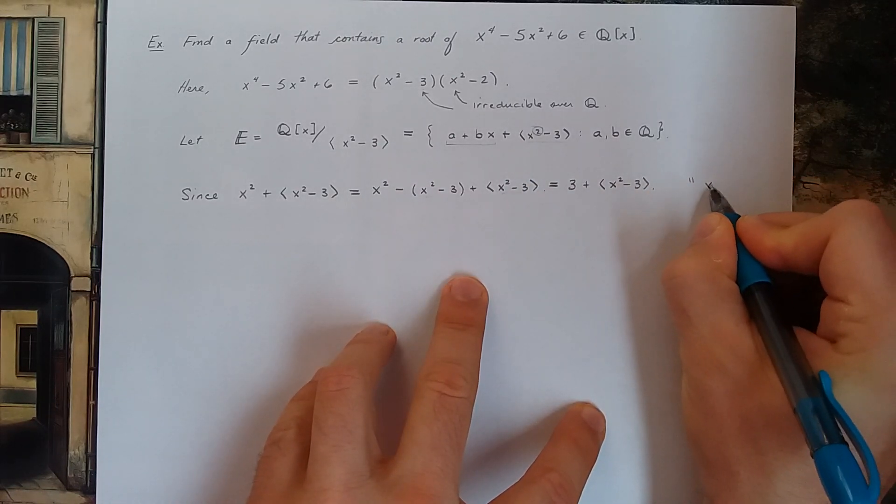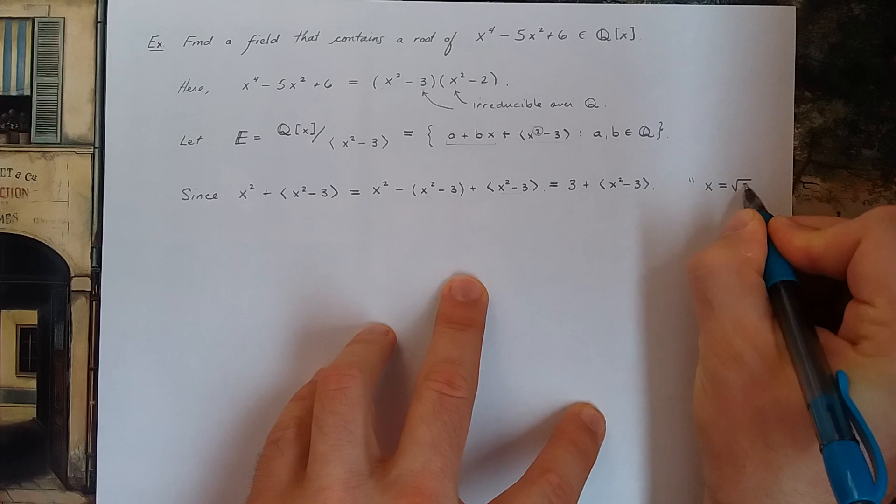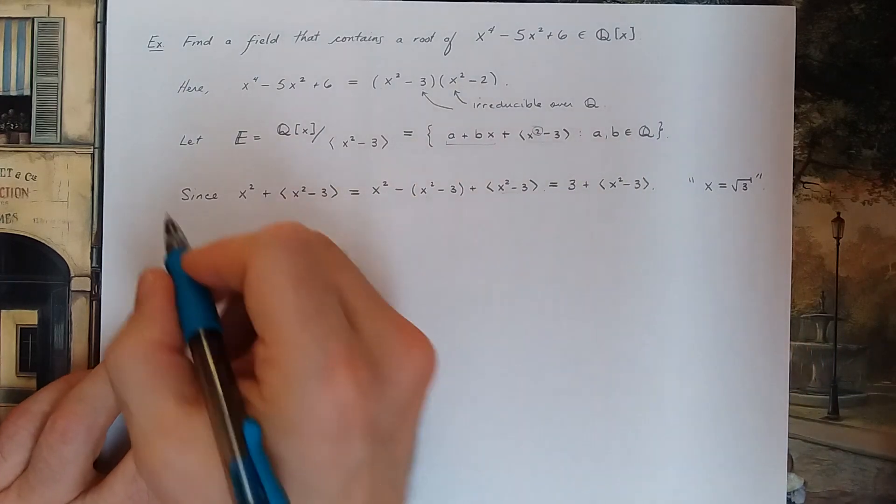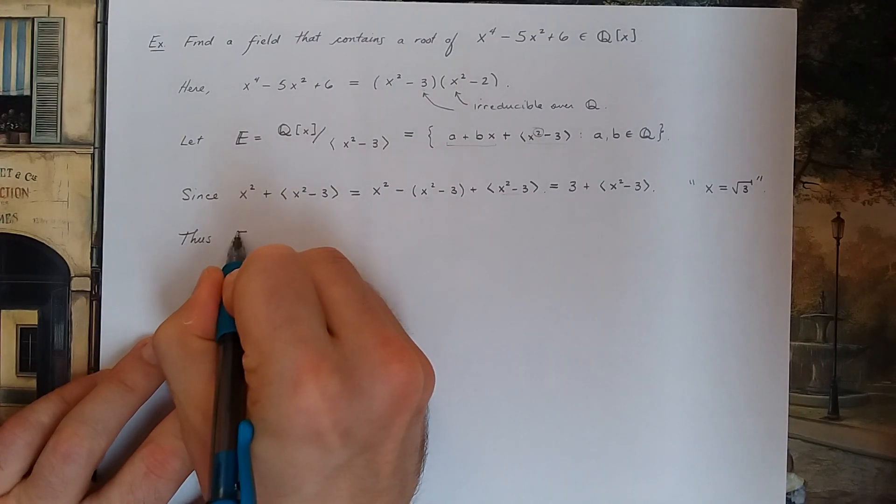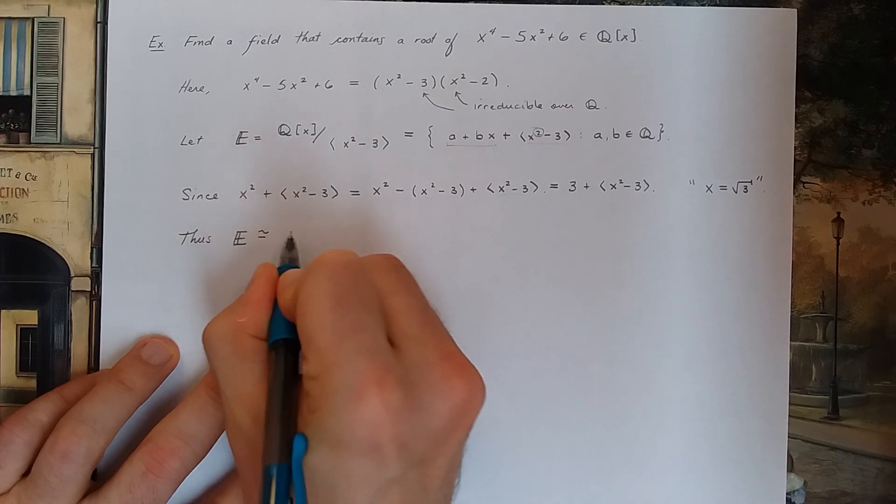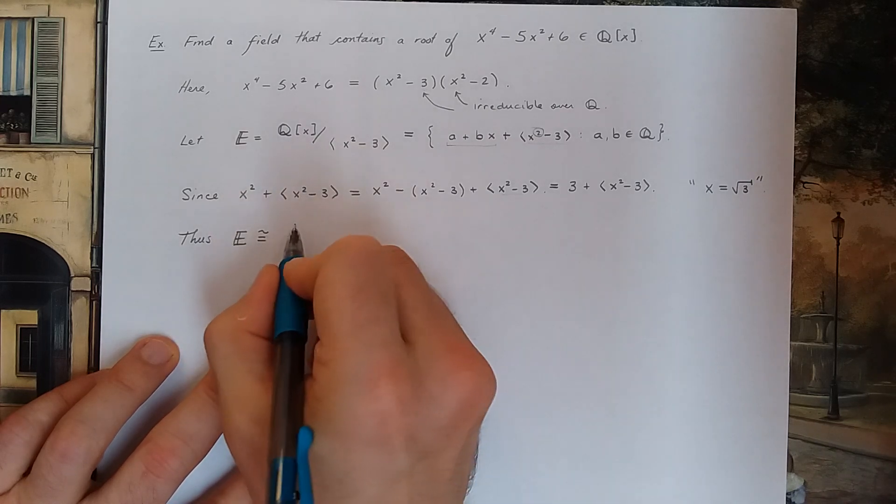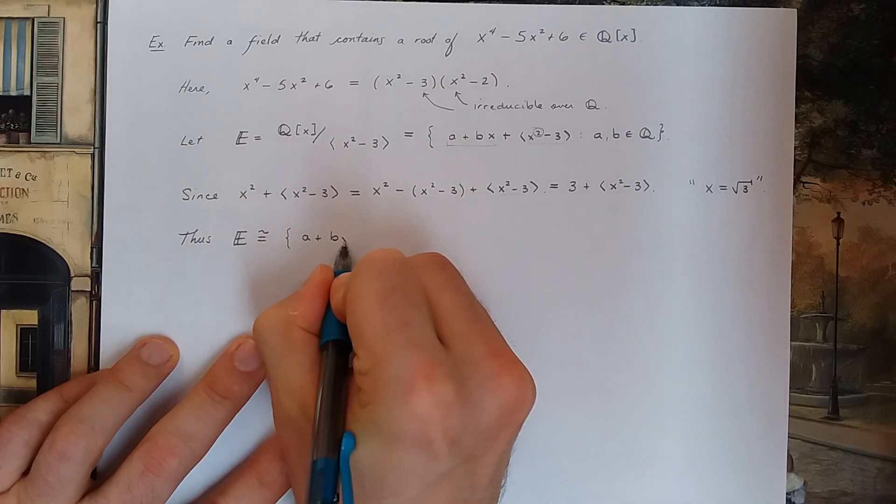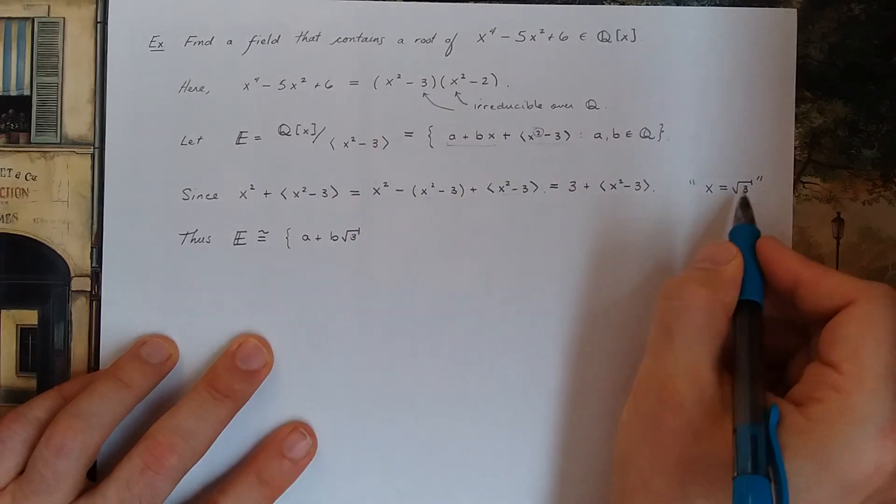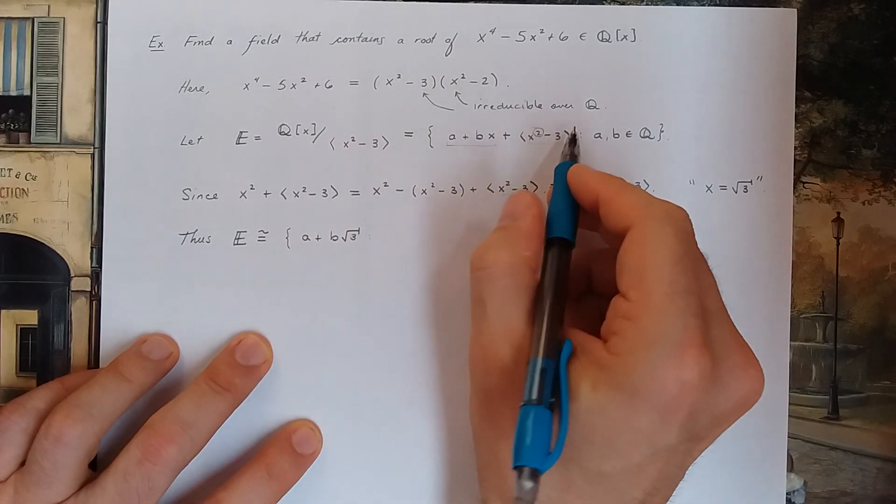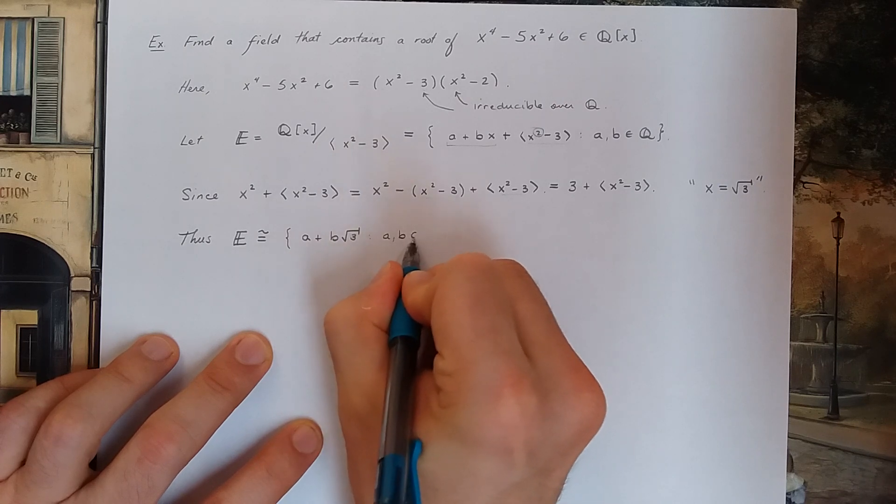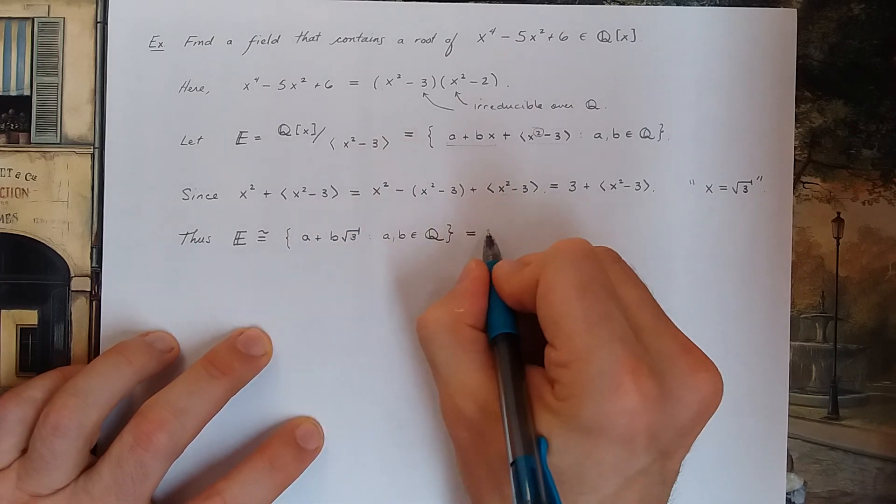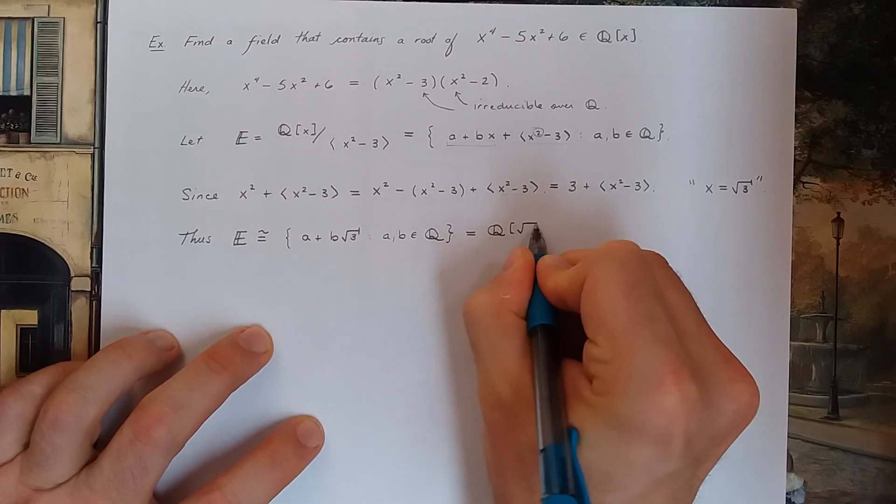So I think x is really the square root of 3. It behaves the same way. So thus using this idea, I could see that my field E is isomorphic to the ring a plus b root 3. So I'm going to take that x and just write root 3 instead, where a and b are rationals. The notation we've had previously for this field is Q adjoin root 3.